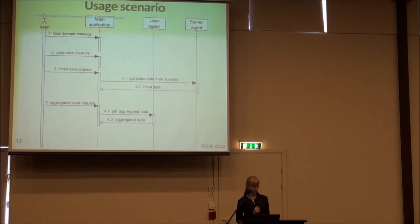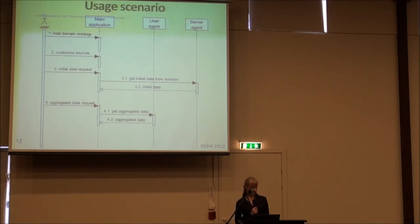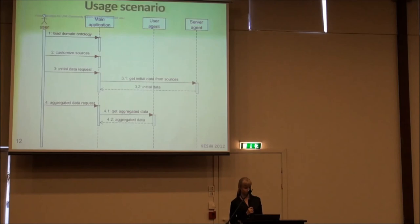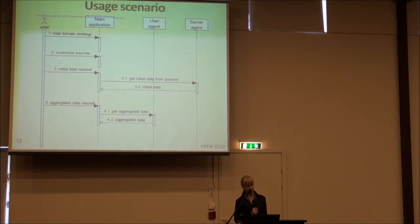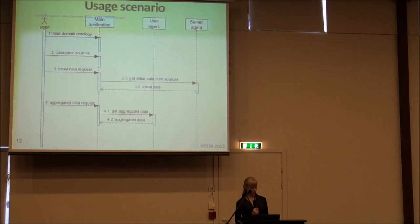Let's see how the user works with the system. First, the domain ontology should be loaded. Then the user defines sources — that is, the SPARQL endpoint with queries. The user then performs computer-aided mapping of ontologies, mapping the endpoint's ontology to the domain ontology. The same should be done for HTML and API sources. After that, the service agent fetches initial data from the defined services. Once a day, the server agent reads data and marks it as new. When the user visits the page, the client agent retrieves and displays the data.